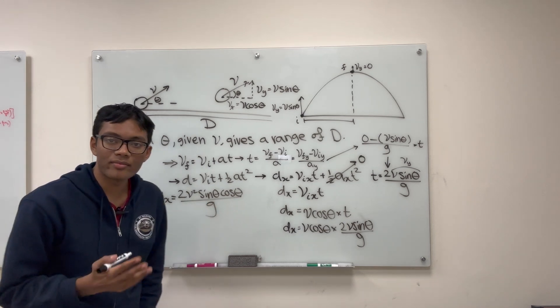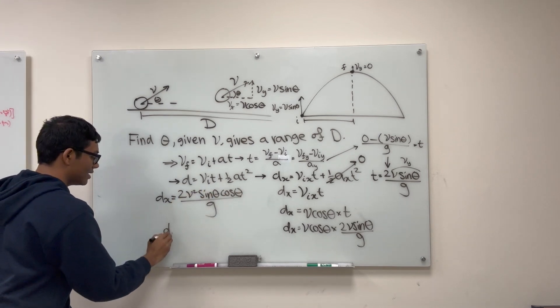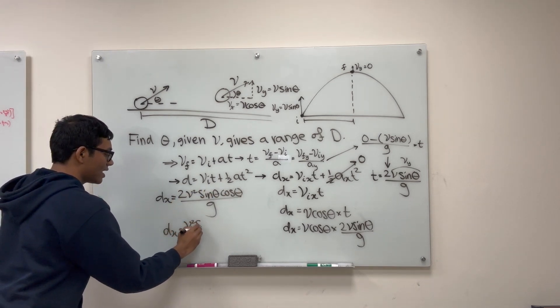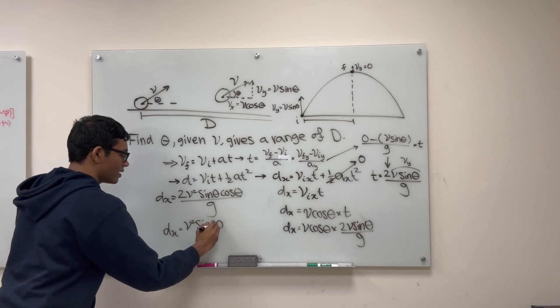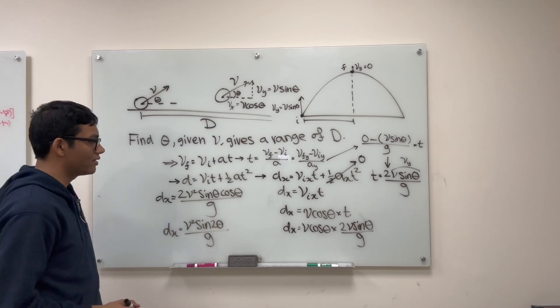Now if you remember your trigonometric identities, then 2 sine theta cosine theta, what is that? If not, sine 2 theta. So our horizontal range is v squared sine 2 theta over g.